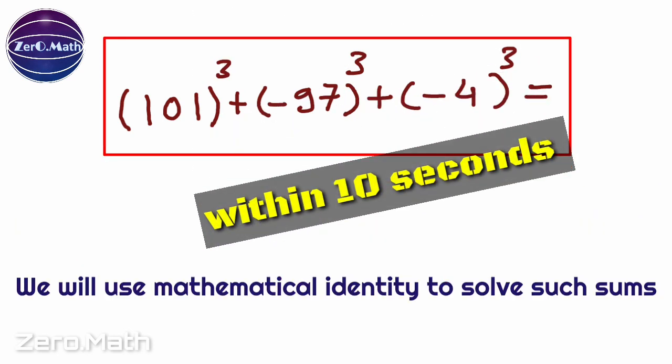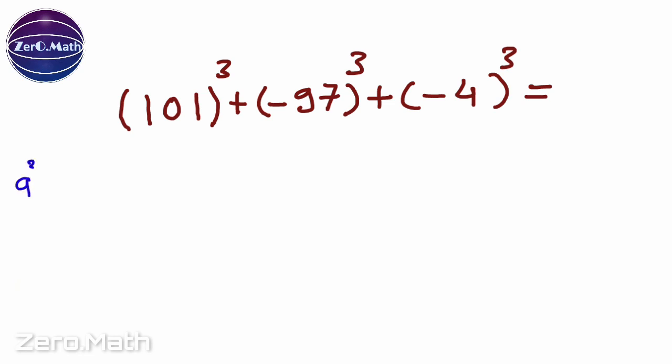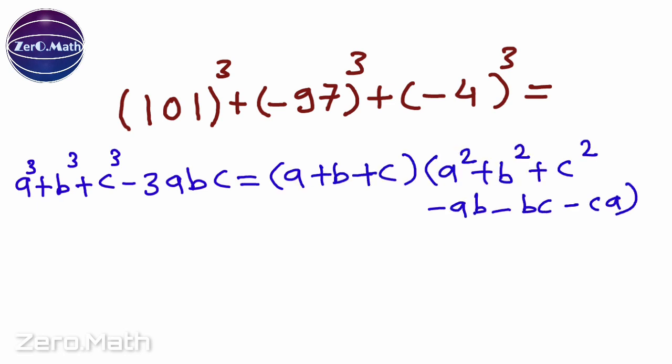We are going to use the mathematical identity to solve such sums. We know the mathematical identity a³ + b³ + c³ - 3abc equals (a + b + c)(a² + b² + c² - ab - bc - ca).